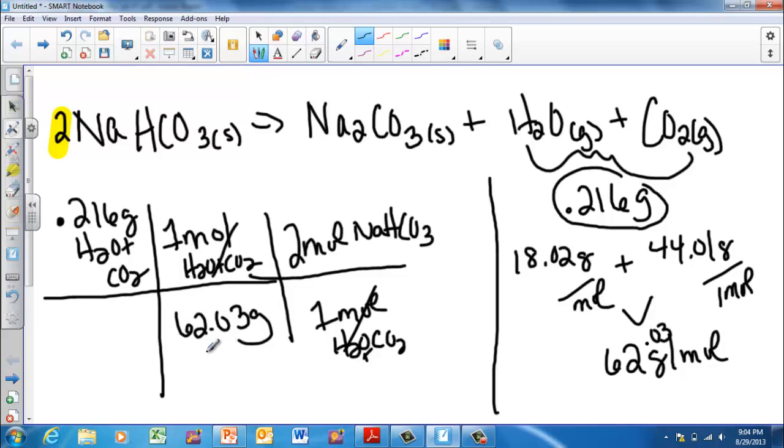So now I take 0.216, I divide it by 62.03, I multiply that by two, and that tells me that I get, and I'm going to go with three sig figs here, 0.00696 moles of sodium bicarbonate.